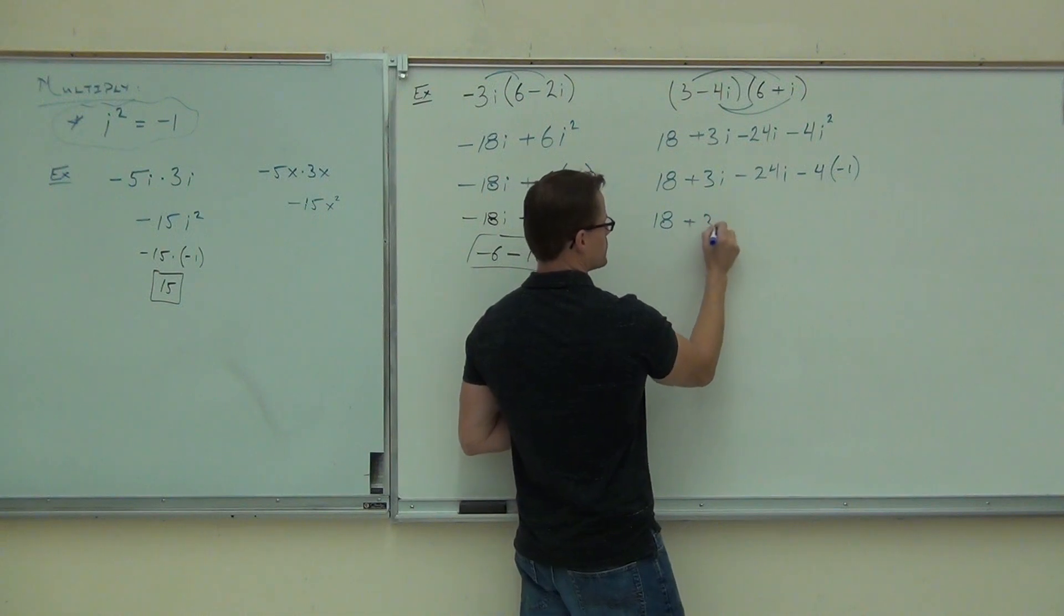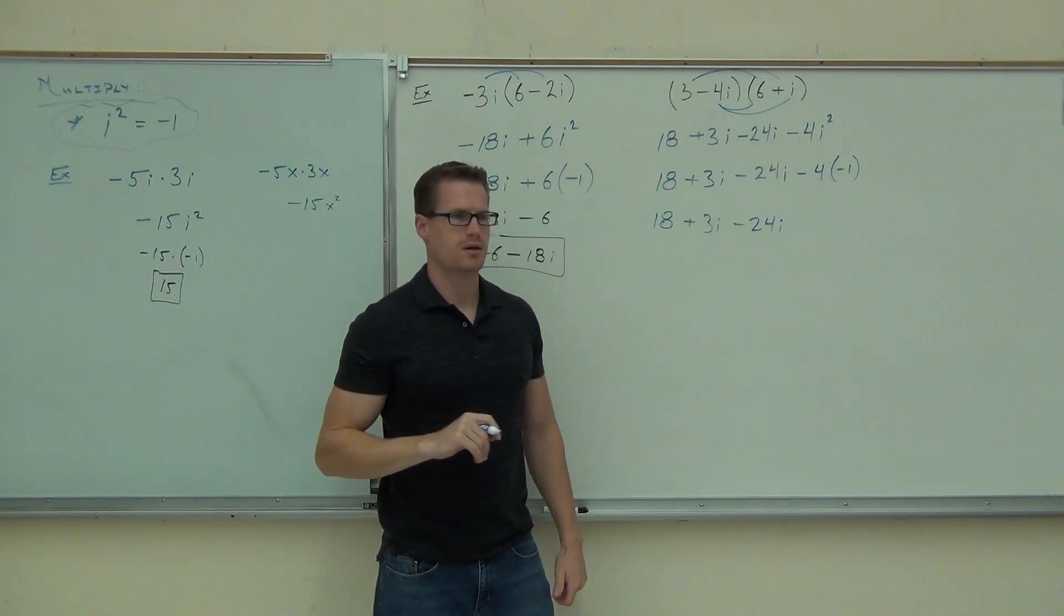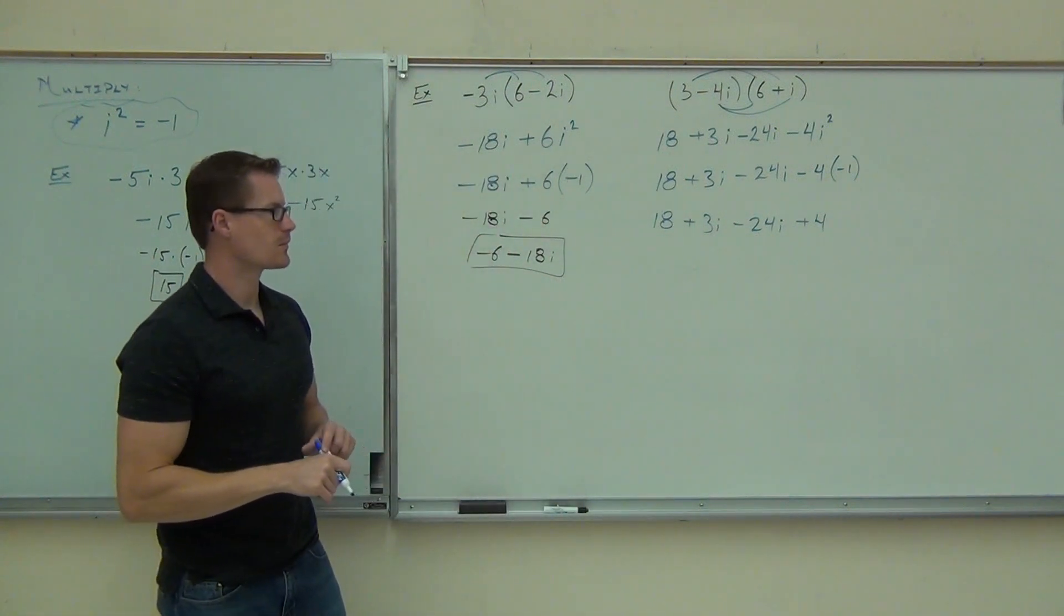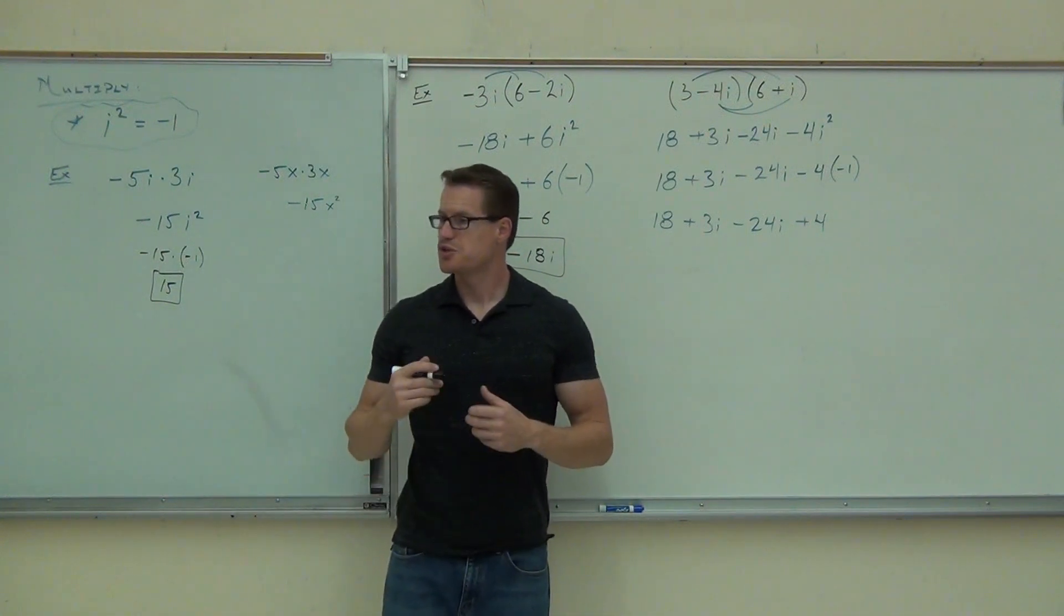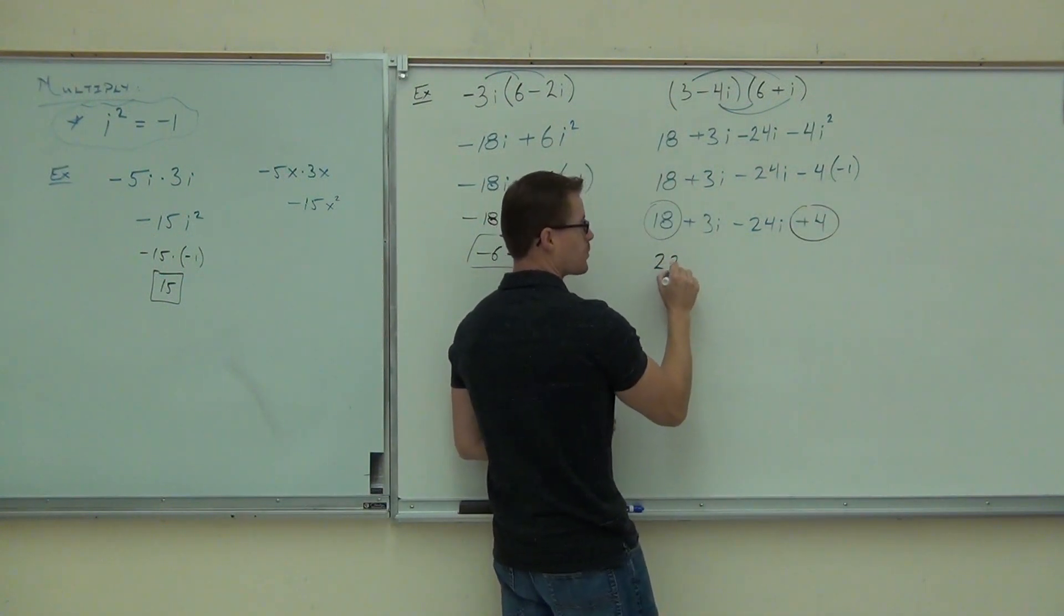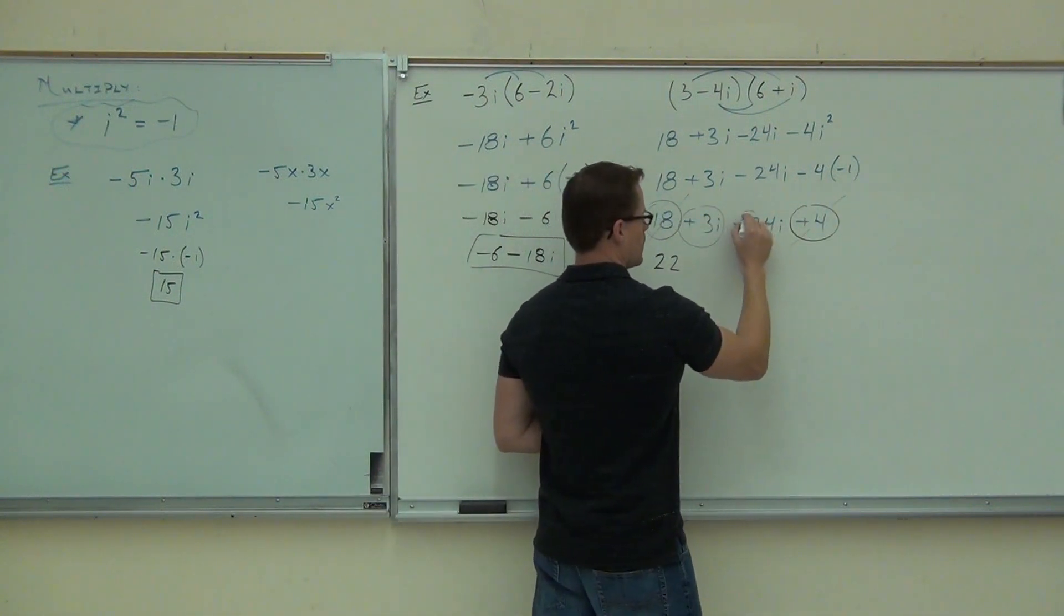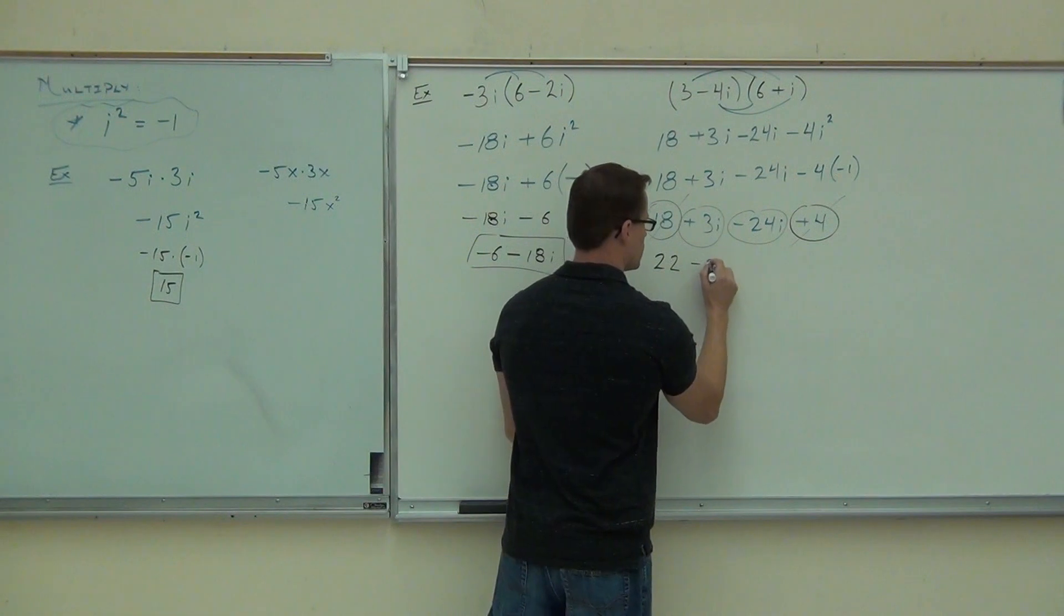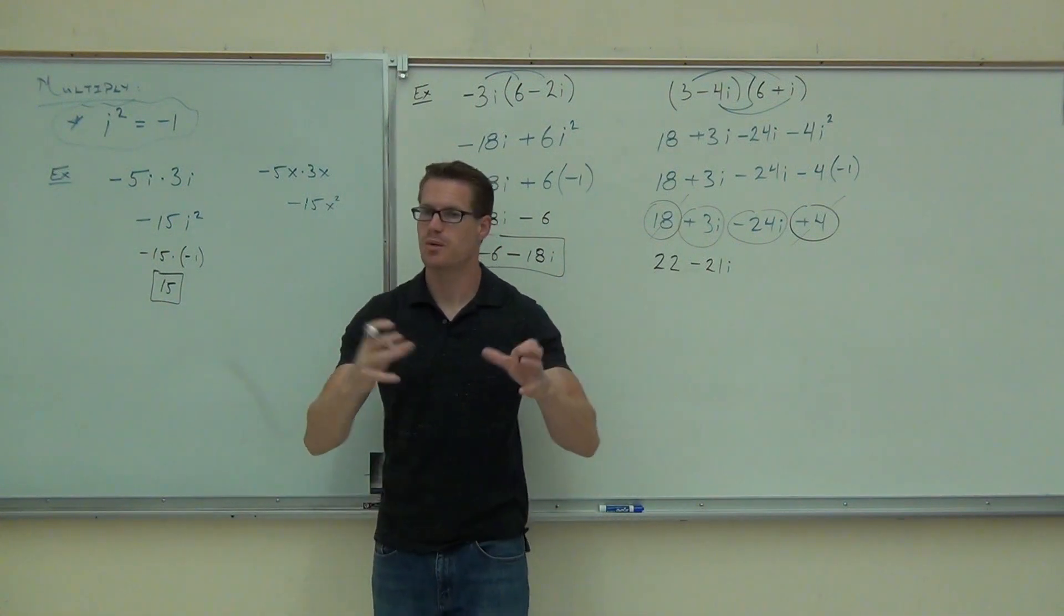Okay. So the 18, no problem, plus 3i, okay, minus 24i, am I going to have minus 4 or plus 4 after that? Plus 4. Sure. That's what the i squared's doing. What next? Let's do it. We should have only numbers and i's. See a couple numbers, that's just 22. We'll write our real part first. I've got 3i, a minus 24i, that's going to give me how much? Minus 21i. Yeah, i. That's it. We have a real part, the imaginary part, that's our complex number.